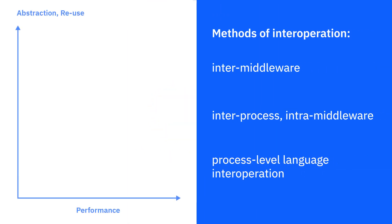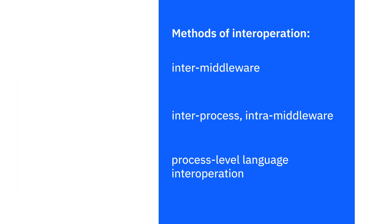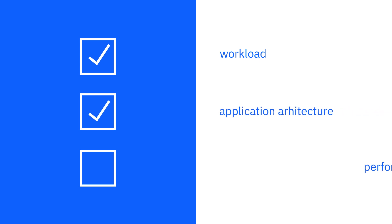There are three main methods of interoperation that exist on a spectrum. Determine what works best for you based on your workload and how you want to architect your applications, and what performance characteristics you prioritize.